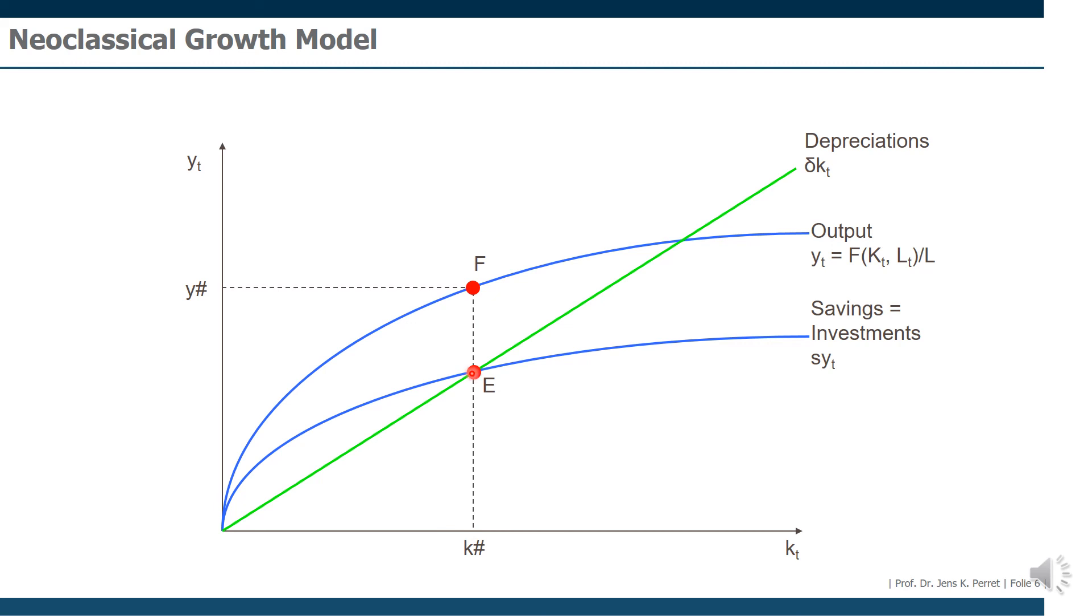However, if we are not interested in the capital stock per capita but in the GDP per capita, we simply extend this line upwards to our production function, our per capita production function, and note the corresponding GDP per capita, giving us here the corresponding GDP per capita value. So this is more or less the same way we worked through mathematically, only by trying to illustrate this graphically.